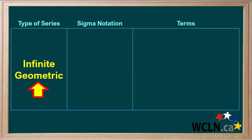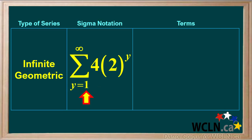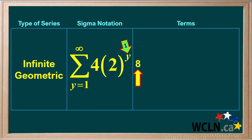The last type of series we'll look at is an infinite geometric series. The function is 4 times 2 to the power y, and in the first term the value of y is equal to 1. The infinity symbol on top of sigma shows us that this series goes on forever. The value of the first term is 4 times 2 to the power of 1, which is 8. For the second term, y equals 2, so the value is 4 times 2 to the power of 2, or 4 times 4, which is 16.